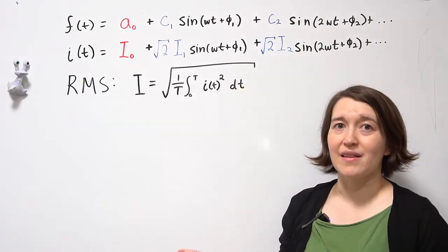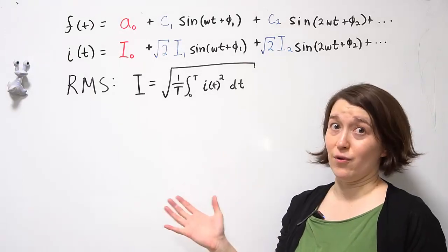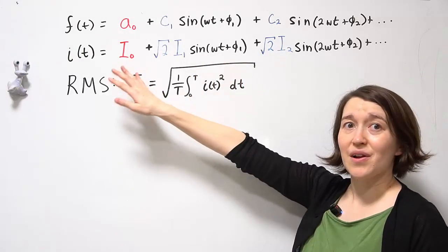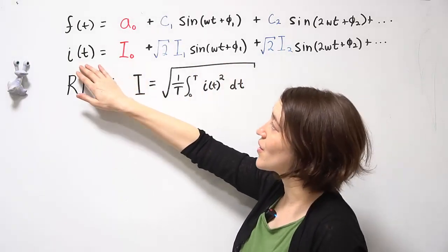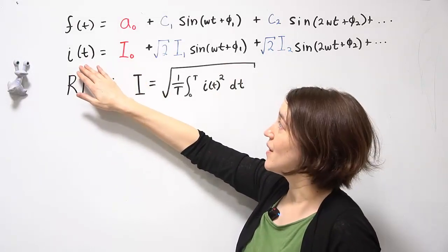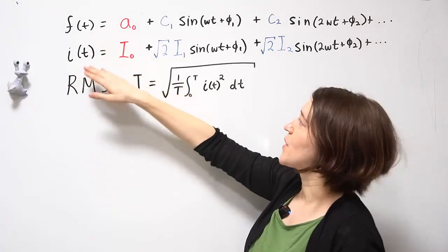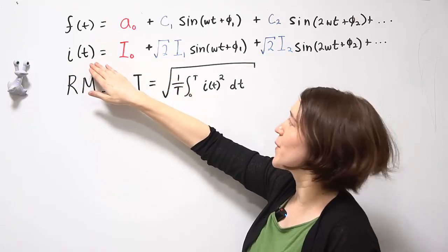We're going to apply this to current and voltage. So we're going to start with current. Our current waveform can be rewritten in the same form. So i(t) is a periodic current waveform.